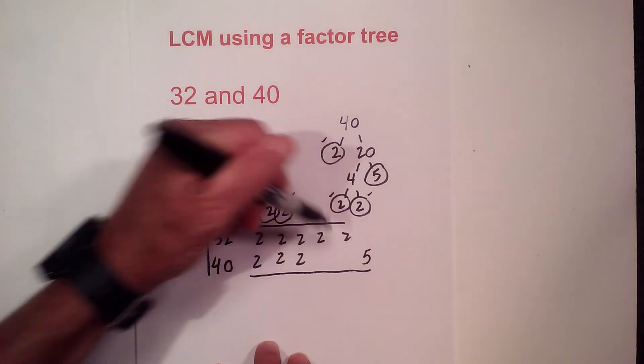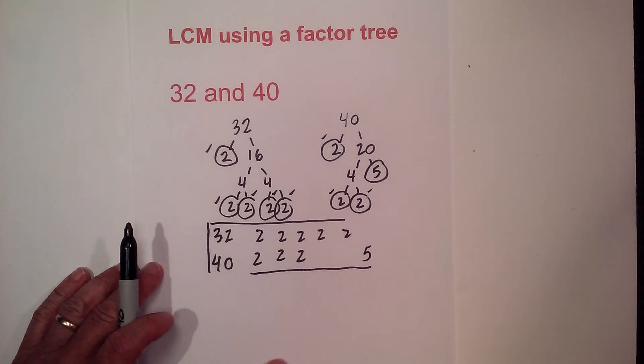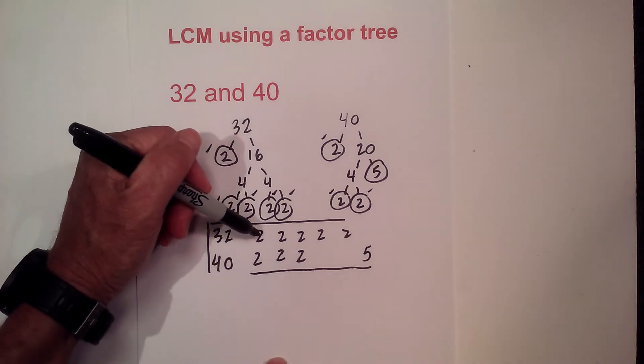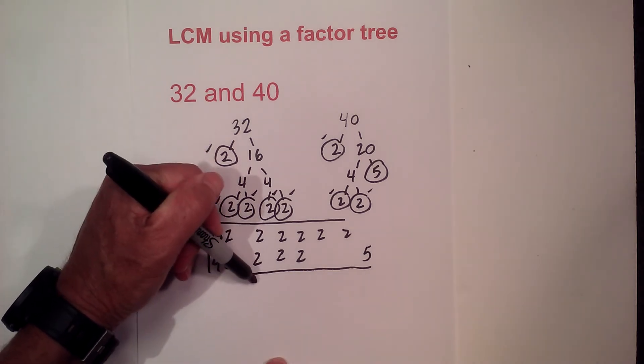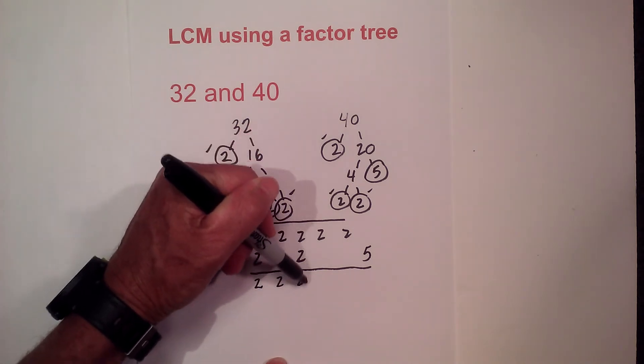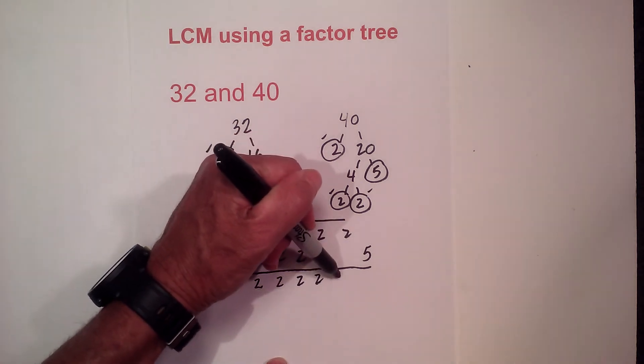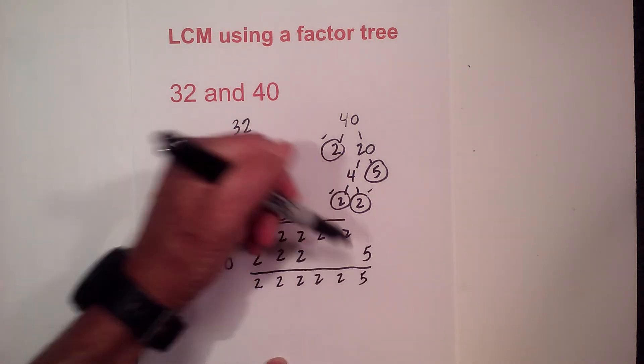Now the rules for finding the least common multiple is if you have a vertical pair since we have two numbers then you only use it once. So I will use 2, bring down a 2, bring down a 2, bring down a 2 because there is only 1. Bring down this 2 and bring down the 5.